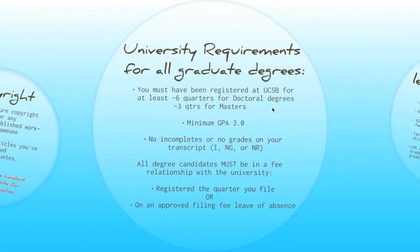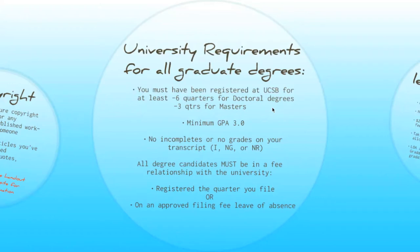University requirements for graduate degrees: you need to have been registered at UCSB for at least six quarters to receive a doctoral degree and three quarters for a master's degree. You must have a minimum GPA of 3.0, and you can't have any incompletes or no grades on your transcripts — those are Is, NGs, or NRs. If you have a faculty advisor who has trouble remembering to enter your grades on time, start reminding them a little early your final quarter, because them not entering your grade is going to delay your degree.